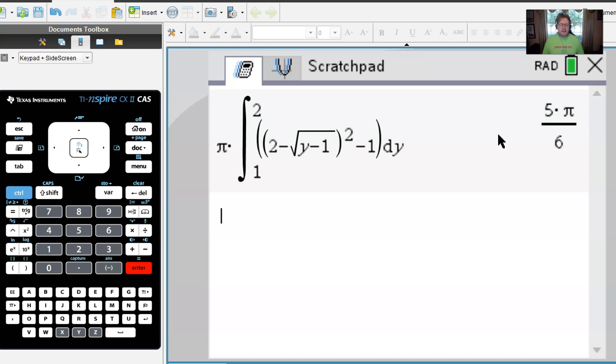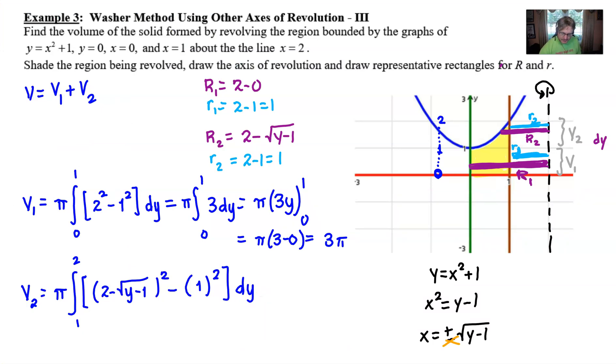So we'll return to our document and we'll add that to our 3π that we got for volume of region 1. So that 5π over 6, which is the result from this particular calculation, leads us to say that V would be 3π plus our 5π over 6. And if we get a common denominator of 6, it looks like we have 18π plus 5π, and that would be 23π all over 6. That would be the volume of this very interesting shape that would be revolved around that axis of x = 2.